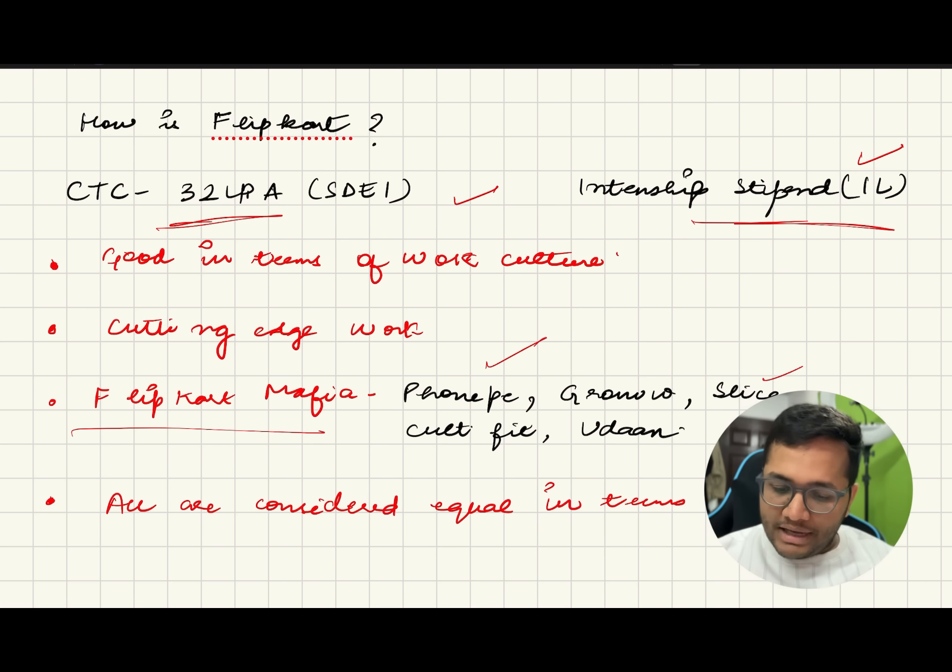Then they came on to start their own companies like PhonePe, Slice, CultFit, Udaan, Groww. A lot of companies came out from Flipkart. All the founders of these companies were once working with Flipkart and now they are having their own companies with billion dollar valuations, billions of dollars of valuation.